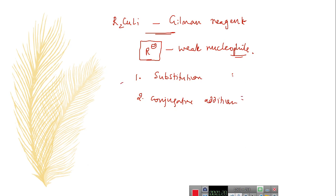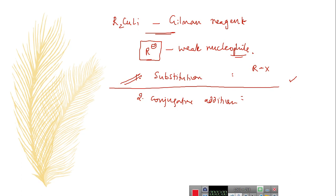In the previous video, we discussed one application — substitution reactions of alkyl halides, allyl halides, alkenyl halides, nucleophilic displacement of tosylates, and nucleophilic substitution reactions of acid halides and epoxides. In this video, I am going to explain about the conjugate addition reactions with Gilman's reagent in organic synthesis.